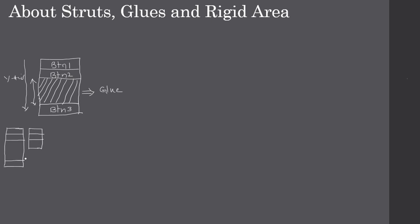Button one and button two will be in the same position and button three will still occupy the same width. You can see how the glue is resizing based on the different height — one, two, three — button one, button two, and button three.